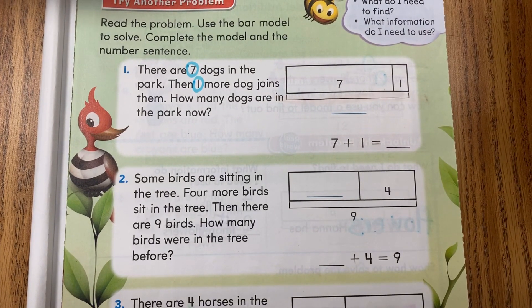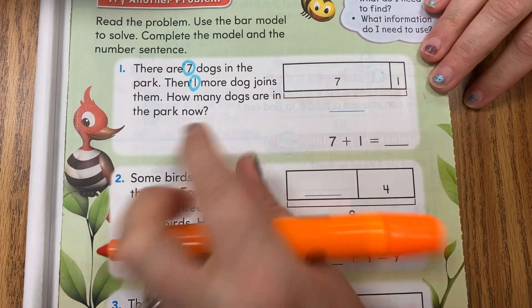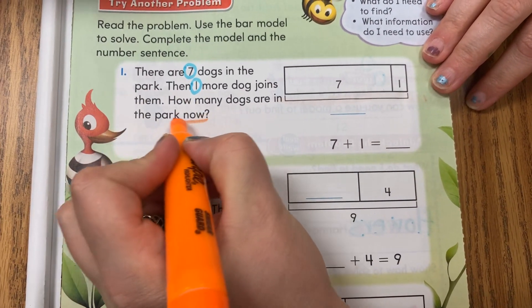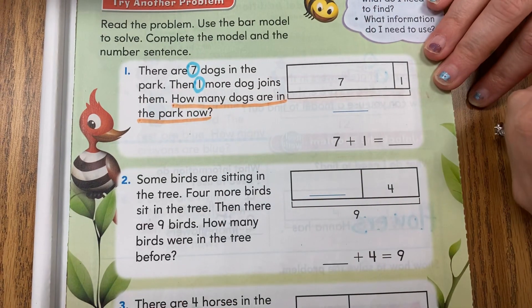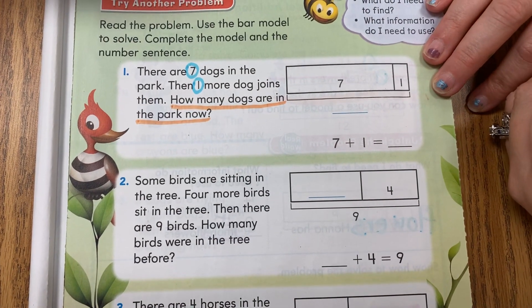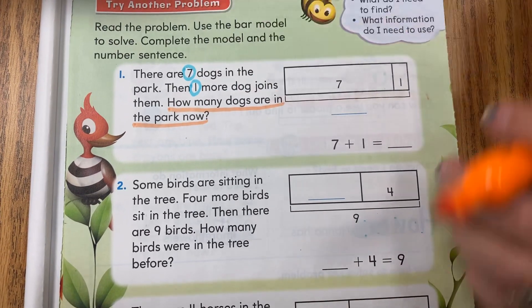Starting with blue, you're going to circle your numbers, so I see a seven and a one. Underline my question: How many dogs are in the park now? Starting at your question mark, you're going to go backwards all the way to your capital and your period.